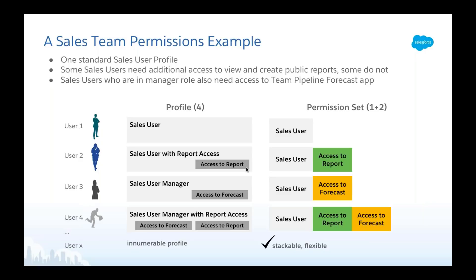Some sales users in a manager role also need access to a pipeline forecasting app, so you have to clone another profile. Things can get out of hand quickly — you end up with four profiles in this case, and your next new feature takes you from 4 to 8, then 8 to 16. It keeps proliferating. With permission sets, on the other hand, you can identify the permissions required for individual tasks — access to report and access to forecast — create one permission set for each, and assign one or both to your users while they all share a single Sales User profile.